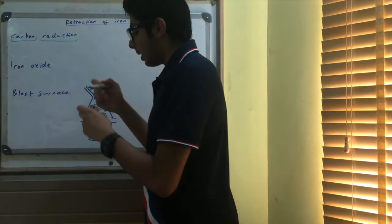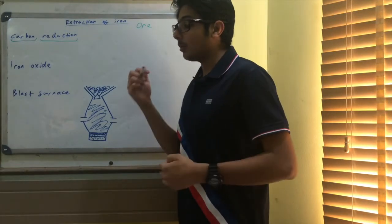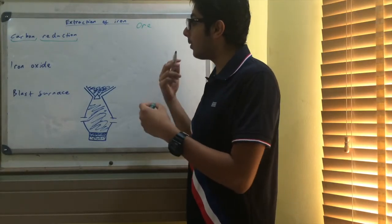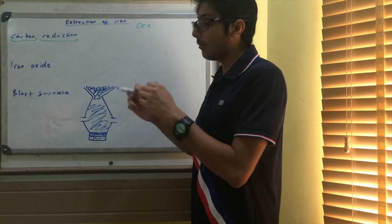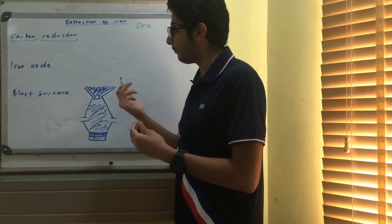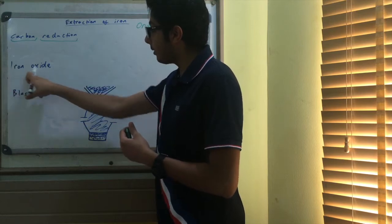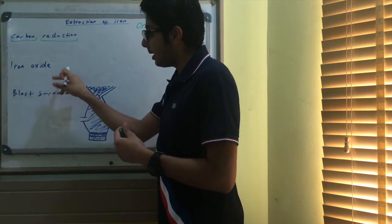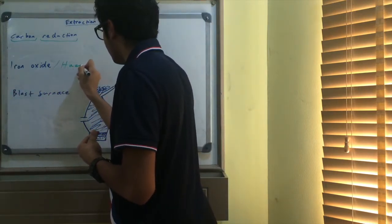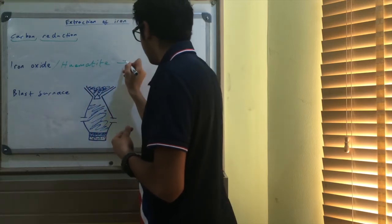Reduction can be either the gain of electrons or the removal of oxygen. In this case, we're going to remove oxygen from the iron ore, and that's how we extract the iron. The ore we're going to use is iron oxide, also called hematite, which is another word for iron ore.